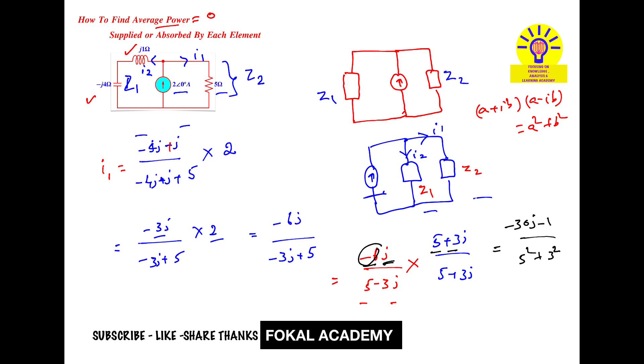So it becomes, this value is 25 plus 9, which is 34. So 1 by 34 into minus 30J plus 18.